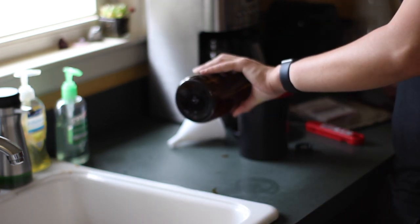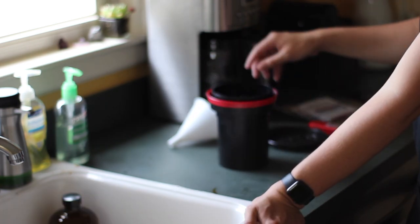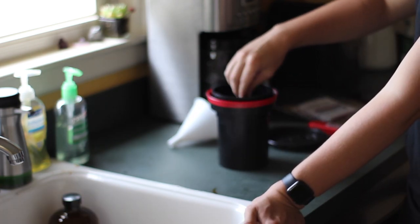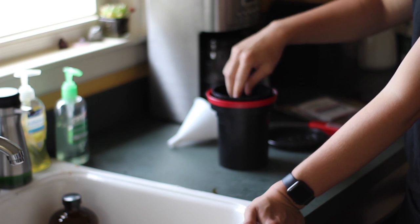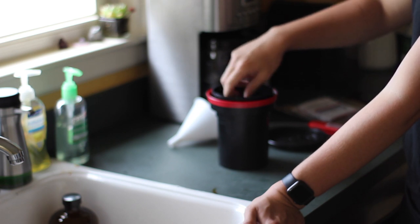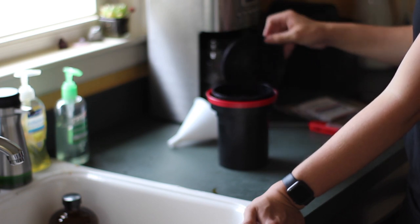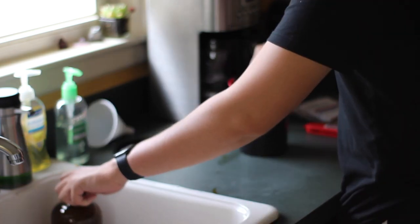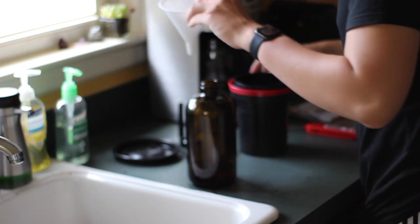First things first, you're going to take the developer and pour that into the tank. You're going to want to have about 10 seconds of agitation every 30 seconds or so, and you're going to want to make sure that this is fairly even so that no parts of the image get overdeveloped or underdeveloped.